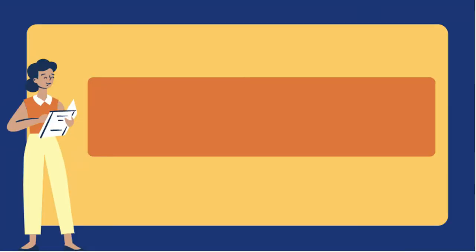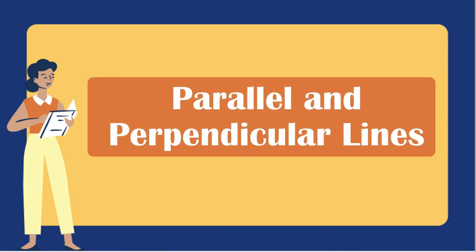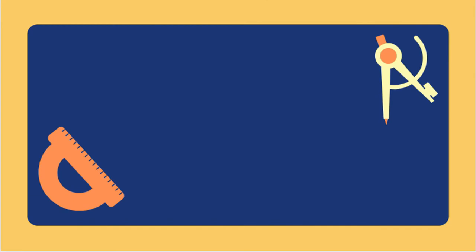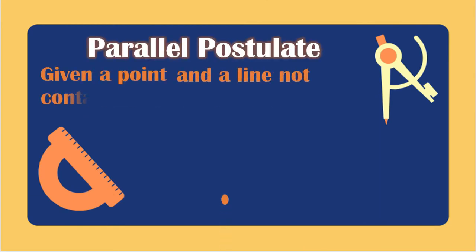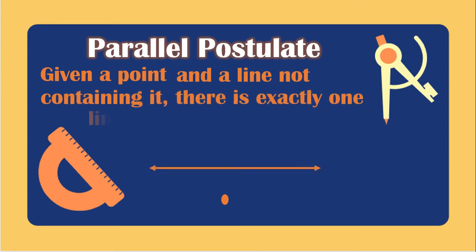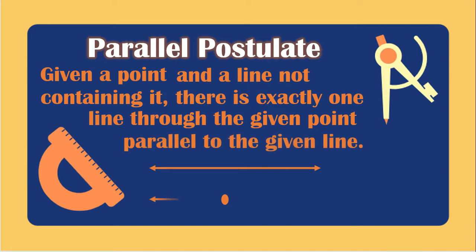This video lesson is all about the conditions of parallel or perpendicular lines and segments. Let us start with the parallel postulate: given a point and a line not containing it, there is exactly one line through the given point parallel to the given line.